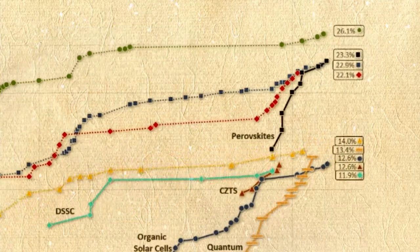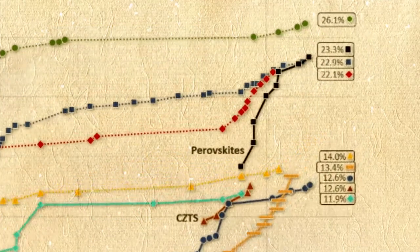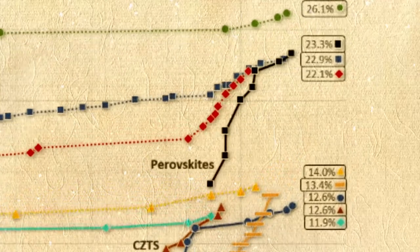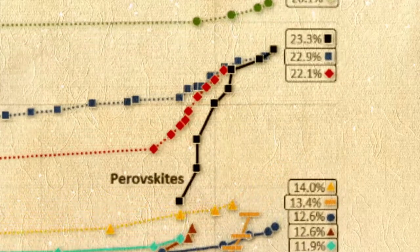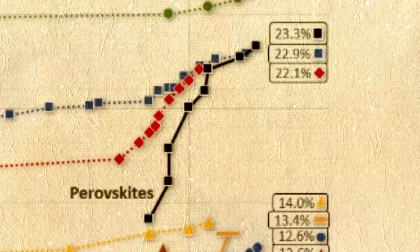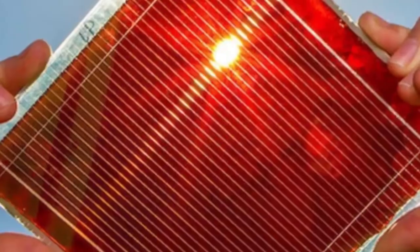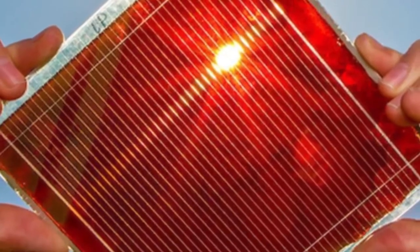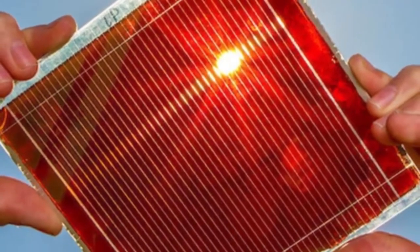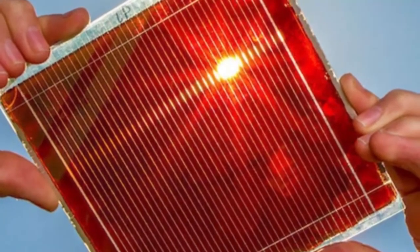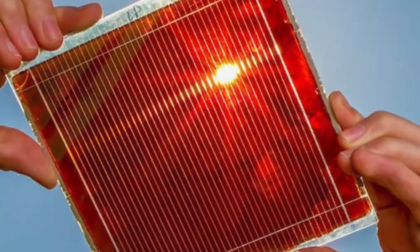The photoelectric power conversion efficiency of Perovskite solar cells has increased from 3.8% in 2009 to 22.1% in 2016. So, Perovskite solar cells are expected to replace traditional silicon solar cells, promising a bright future for the solar industry.